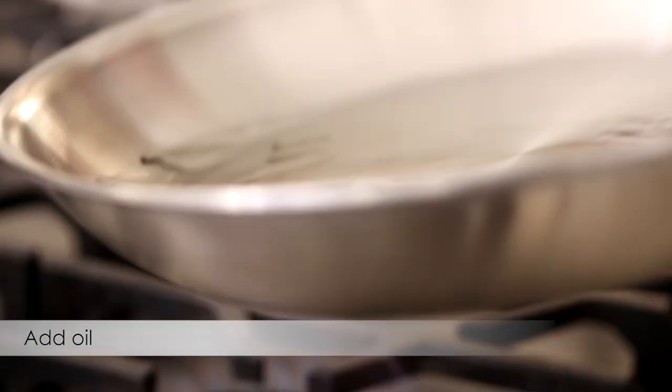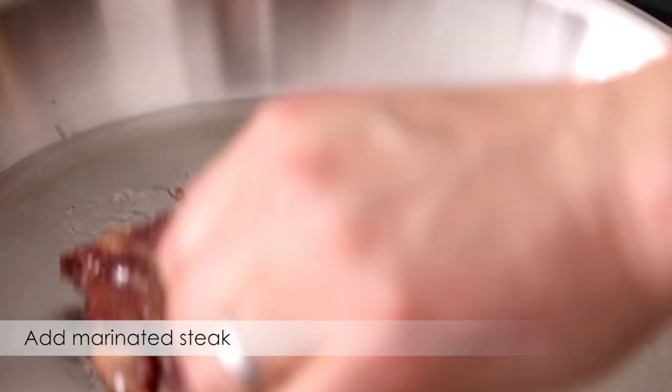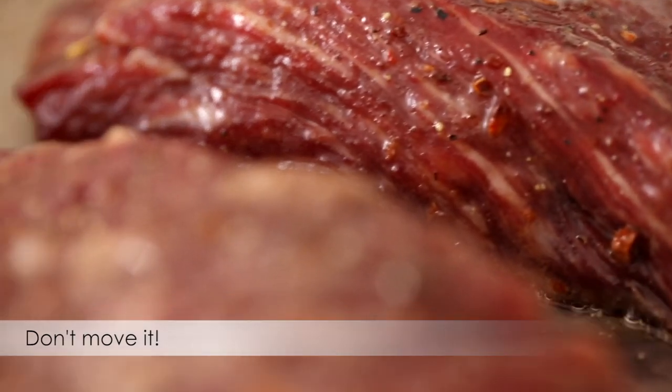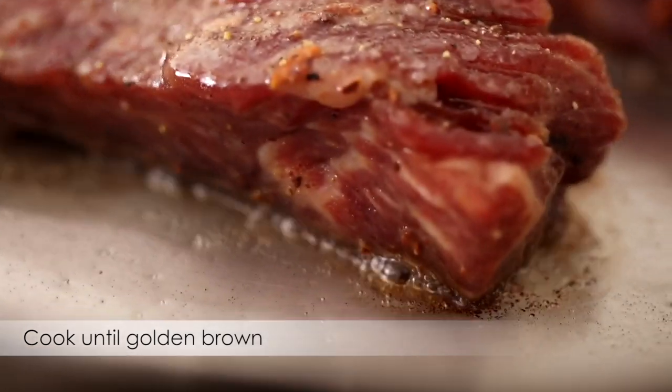Add oil and then in with the marinated steak. The key is leave the steak in its position, don't move it, and cook it until it's nice and golden brown.